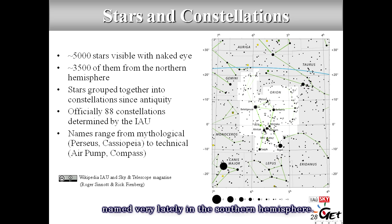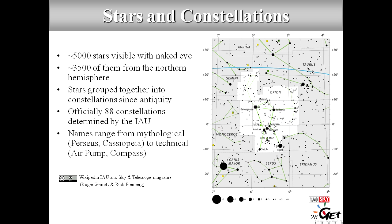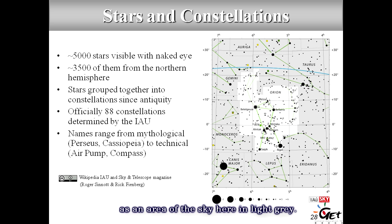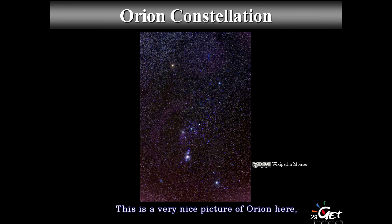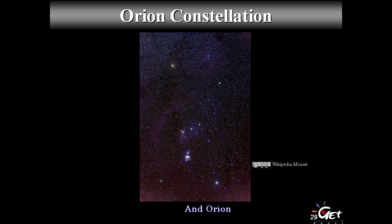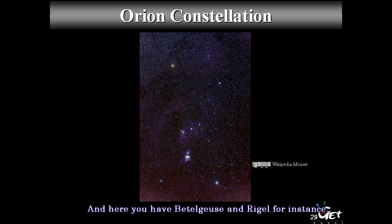Here is the example of Orion — eight stars composing it. The geometric form is called the asterism; the constellation is defined as the entire area of sky around it. Next to Orion you have Gemini, Taurus, Lepus, Canis Major, etc. This is a nice picture of Orion — two very bright stars, and it's easy to spot thanks to the three almost perfectly aligned stars of the belt. Orion is visible in the Northern Hemisphere mainly during winter and is very easy to spot. Here you have Betelgeuse and Rigel.